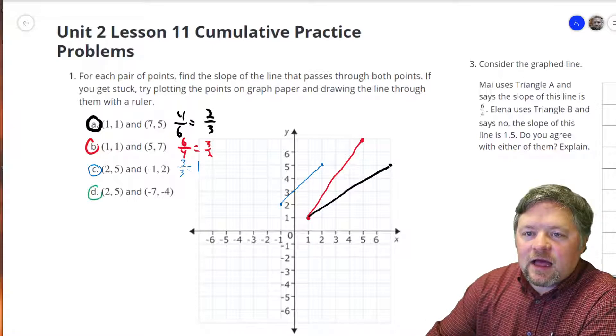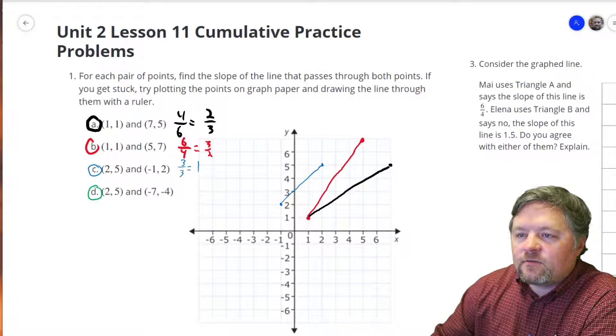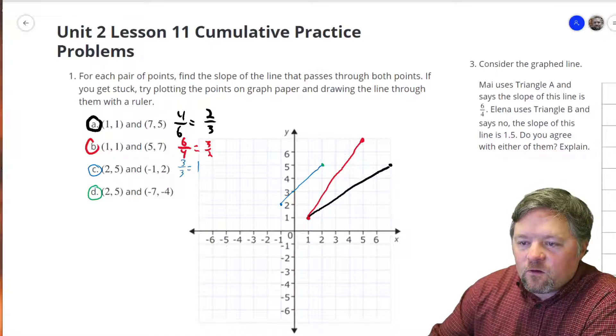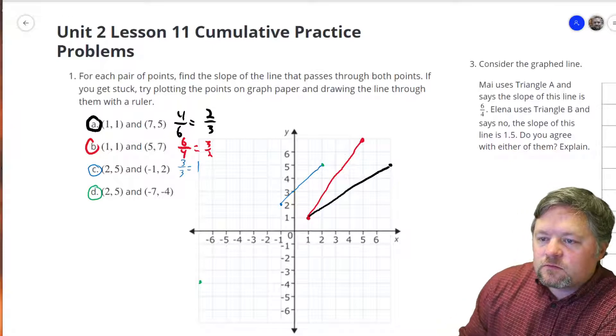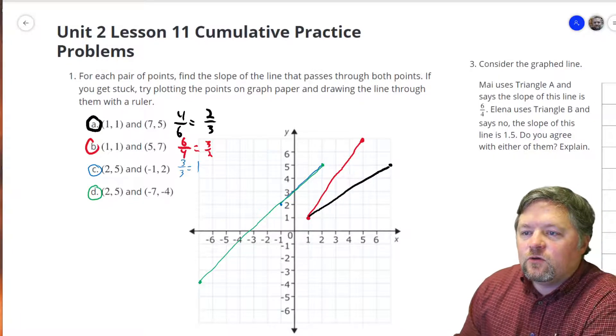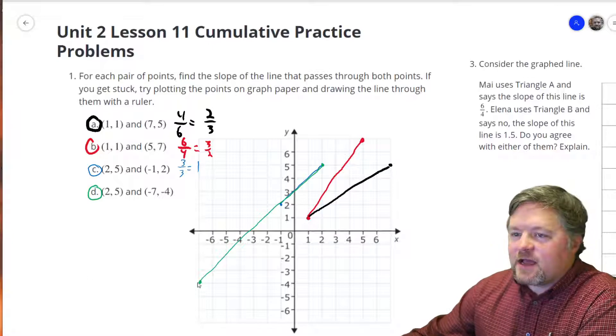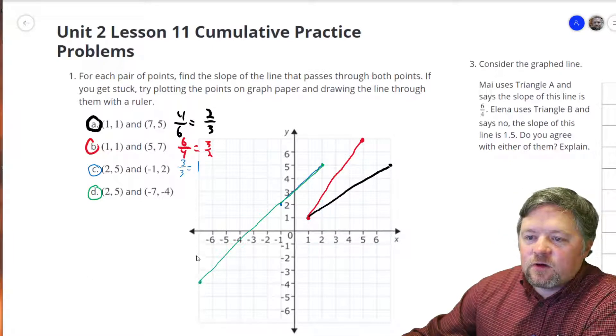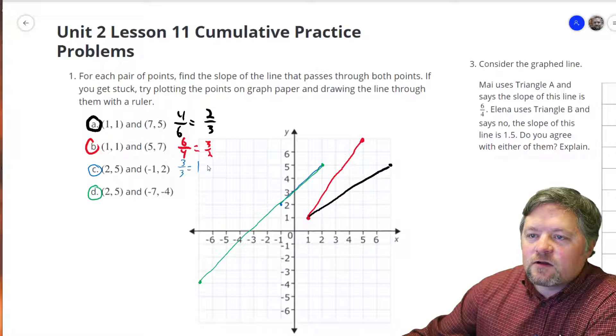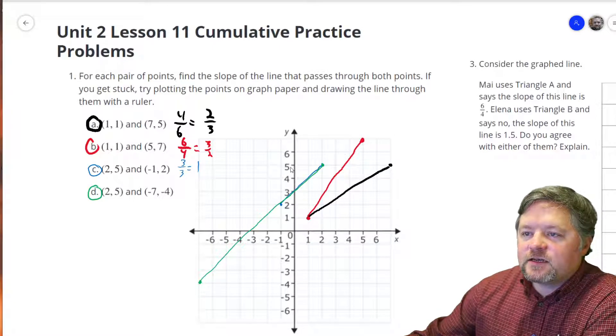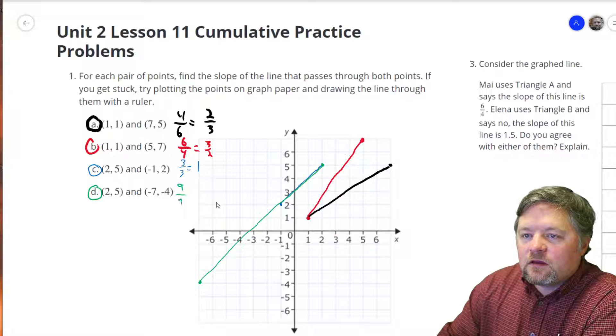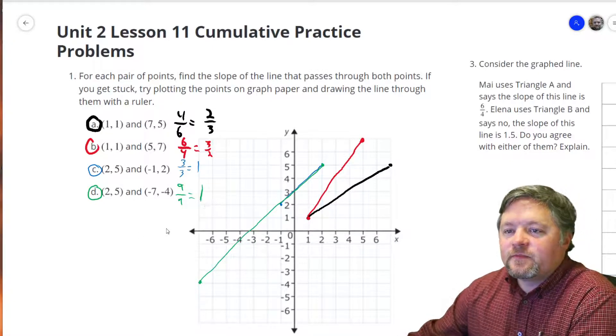Last one here. We go through 2, 5, same point as before, and negative 7, negative 4. Let's see how well I can draw this one. What do we notice now? Rise of 1, 2, 3, 4, 5, 6, 7, 8, 9. Run of 1, 2, 3, 4, 5, 6, 7, 8, 9. 9 over 9 is also just 1, slope of 1.